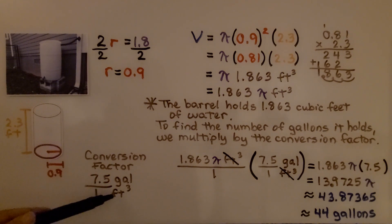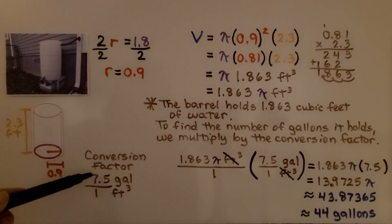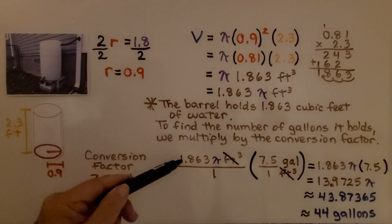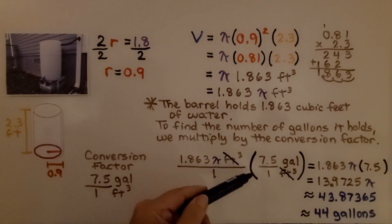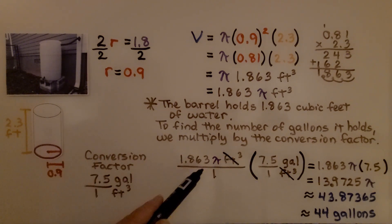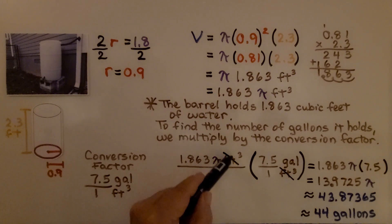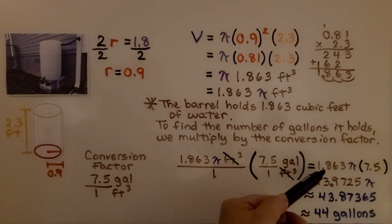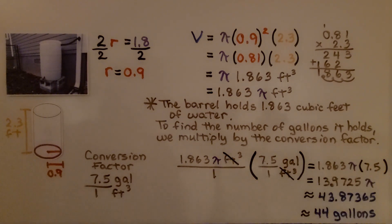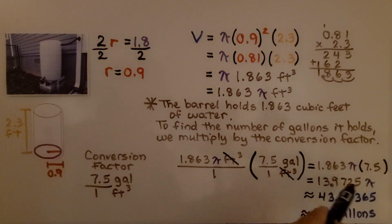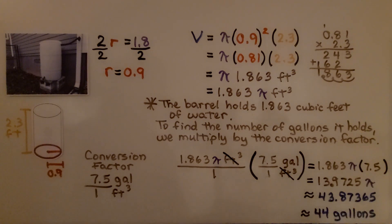To find the number of gallons, we multiply by the conversion factor: one cubic foot of water equals 7.5 gallons. We have 1.863π cubic feet multiplied by the conversion factor 7.5 over 1. The cubic feet cancels out as cubic feet over cubic feet, so we have 1.863π times 7.5. We do the math and get 13.9725π. Multiplying by 3.14 gives us approximately 43.87365, and rounding to the nearest gallon we get 44 gallons.